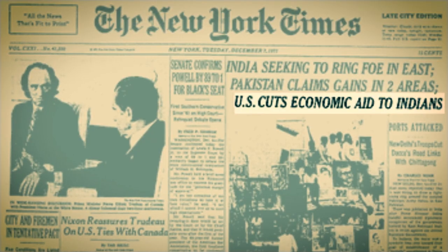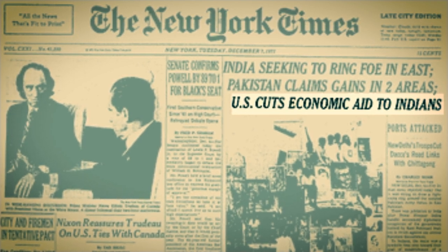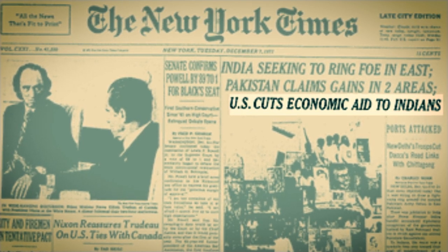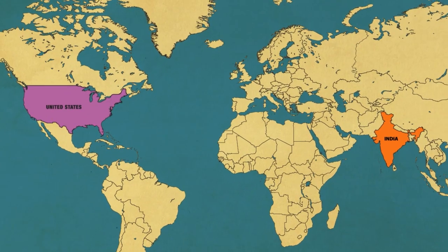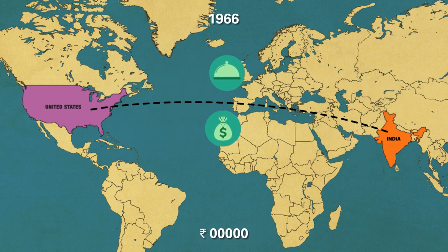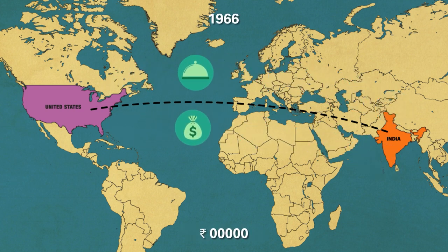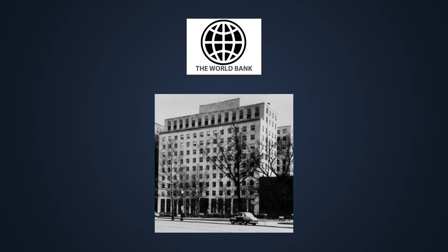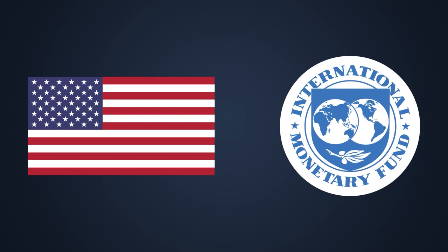But in 1966, the US cut off aid at the time of the Indo-Pak war. From foreign aid of 819 crore rupees in 1965, aid came to nil in 1966. As a condition to resume aid, the World Bank, which used to channel the foreign aid, asked India to devalue the rupee. The US and the IMF also insisted that India liberalise imports as a condition for receiving aid and loans.